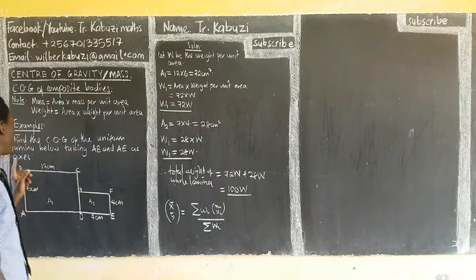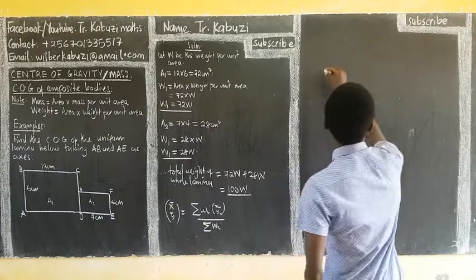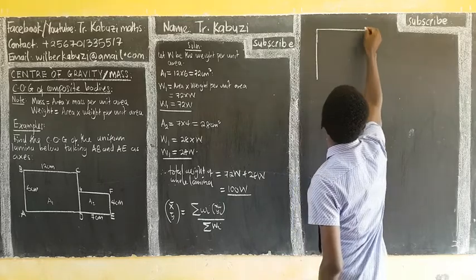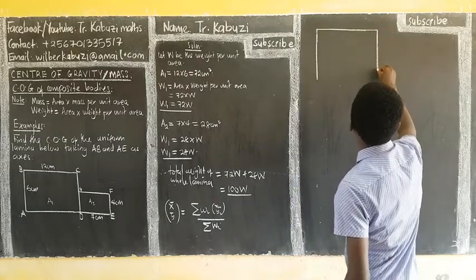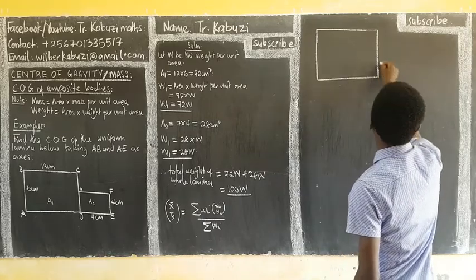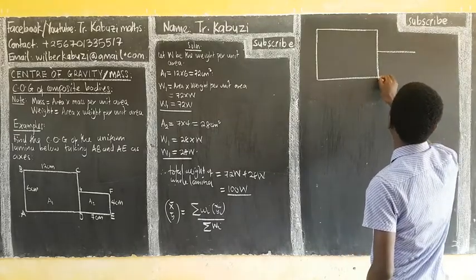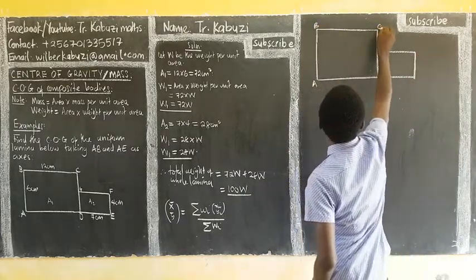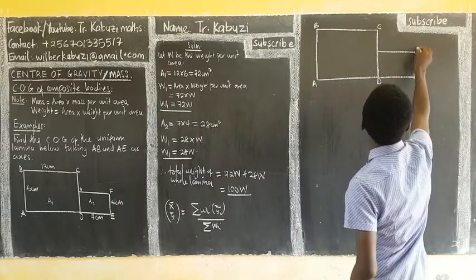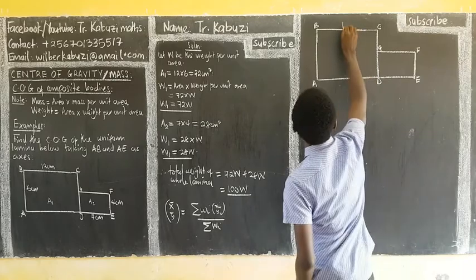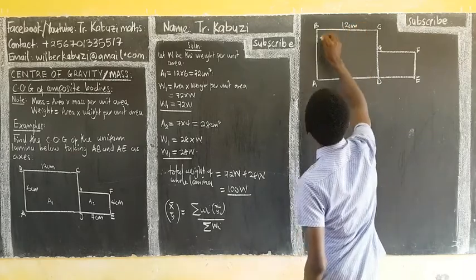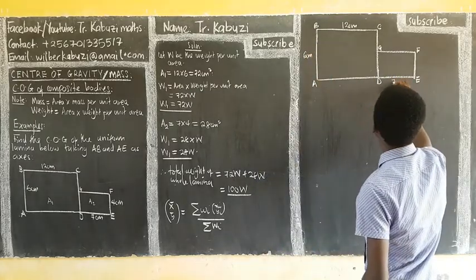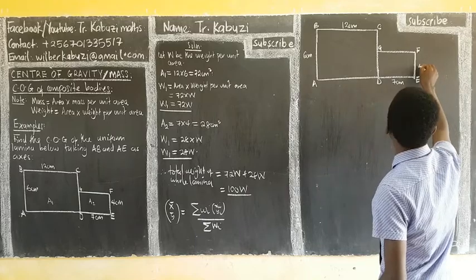Let me sketch this, since we are taking AB and AE as axes. So this is my first lamina and my second lamina. We label the corners A, B, C, D, E, F. The first section has dimensions 12 centimeters and 6 centimeters. The second section has dimensions 7 centimeters and 4 centimeters.